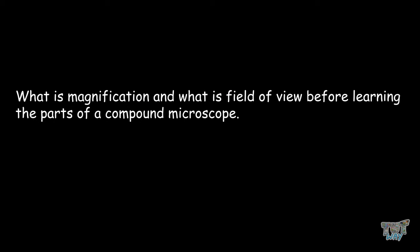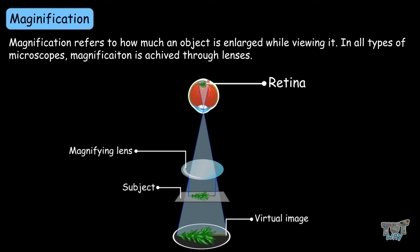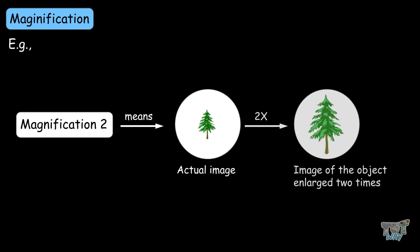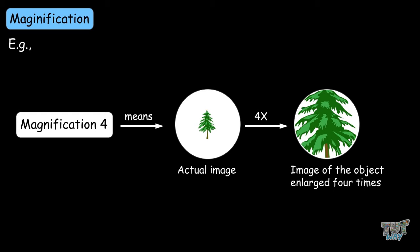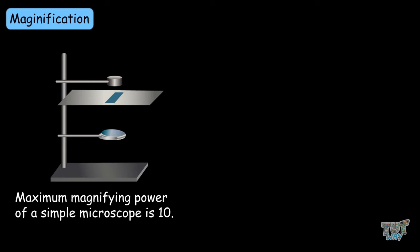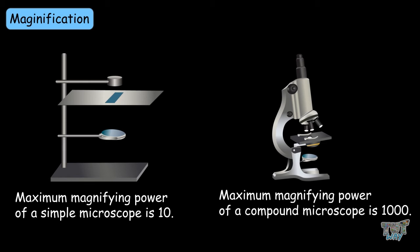Let's first learn: what is magnification, and what is the field of view, before learning the parts of the compound microscope. Magnification refers to how much an object is enlarged while viewing it. In all types of microscopes, magnification is achieved through lenses. The number of times the image of an object is enlarged is expressed as a numeric value. For example, magnification 2 means the image will be enlarged twice its original size; magnification 4 means four times; magnification 10 means ten times. The maximum magnifying power of a simple microscope is 10, and a compound microscope is 1000.